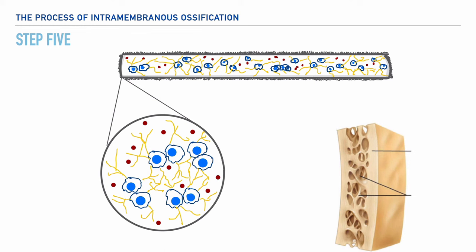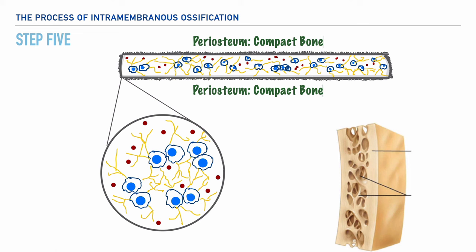As this process continues, we'll end up having two distinct portions. The outer portion of this bone tissue is called the periosteum or compact bone, and the inner portion, which is largely surrounded by capillaries, is referred to as trabecular bone.